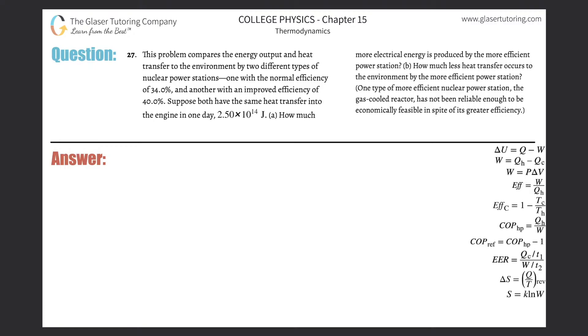Number 27. This problem compares the energy output and heat transfer to the environment by two different types of nuclear power stations, one with a normal efficiency of 34% and another with an improved efficiency of 40%. Suppose both have the same heat transfer into the engine in one day, 2.5 times 10 to the 14th joules. Letter A: How much more electrical energy is produced by the more efficient power station?